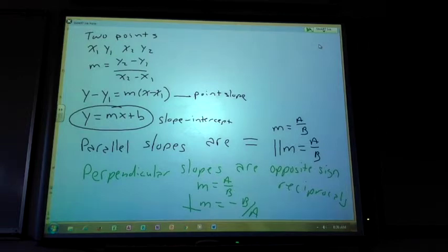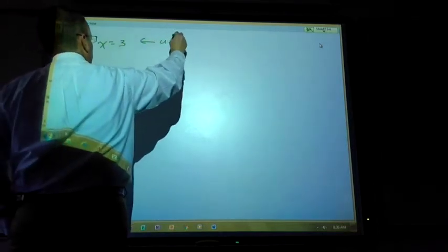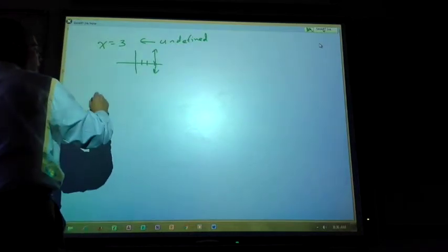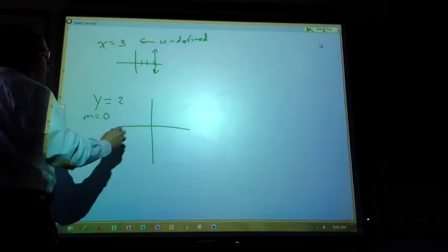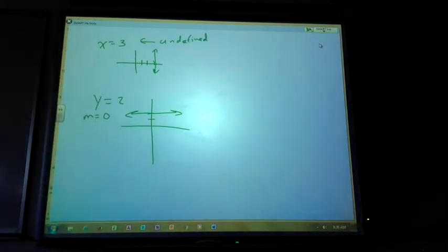Perpendicular slope to something that's 0 has an undefined slope. If you have something that's an undefined slope, the perpendicular to that would be 0. So if I have x is equal to 3, this has an undefined slope. It's a vertical line through 3. If I have y is equal to 2, this has a slope that is 0. So horizontal line has a slope of 0. The perpendicular line to a horizontal line is a vertical line. The vertical line has a slope that is undefined.